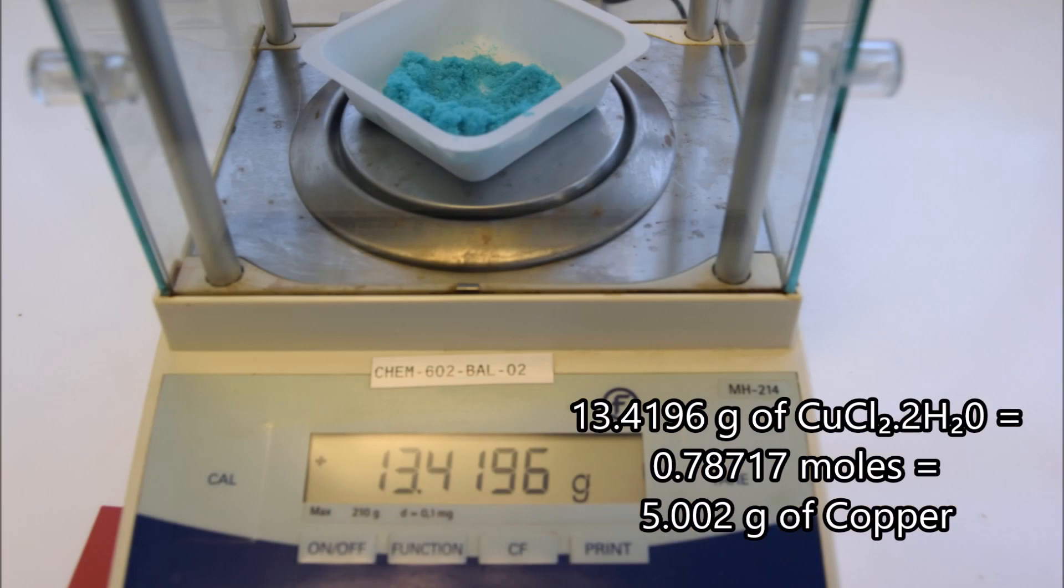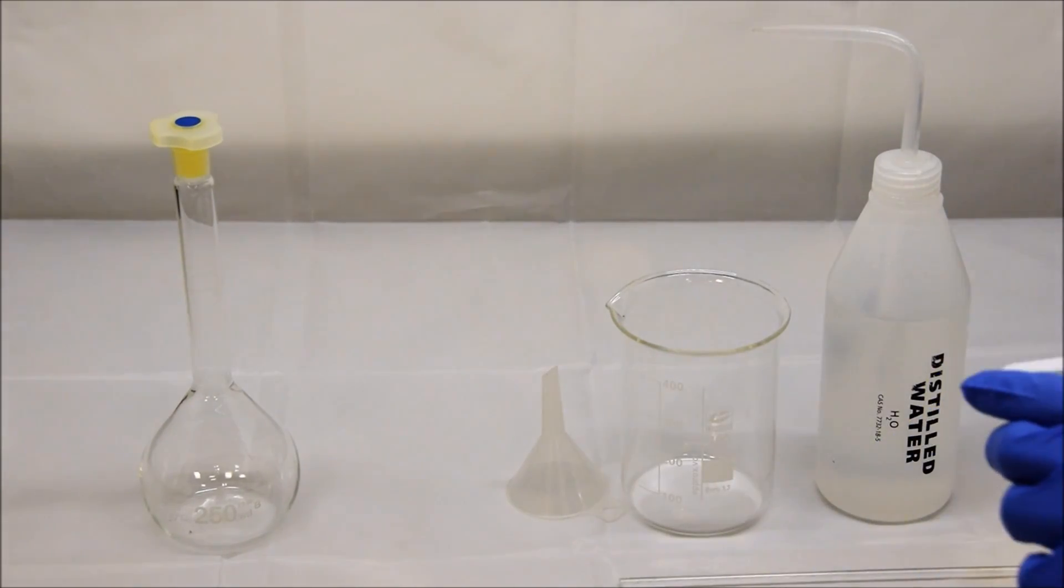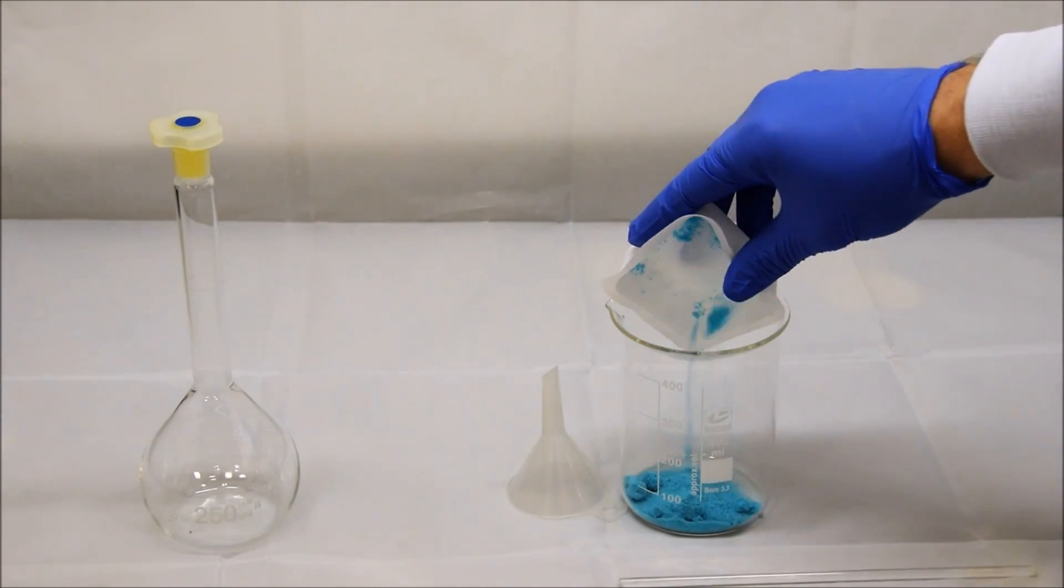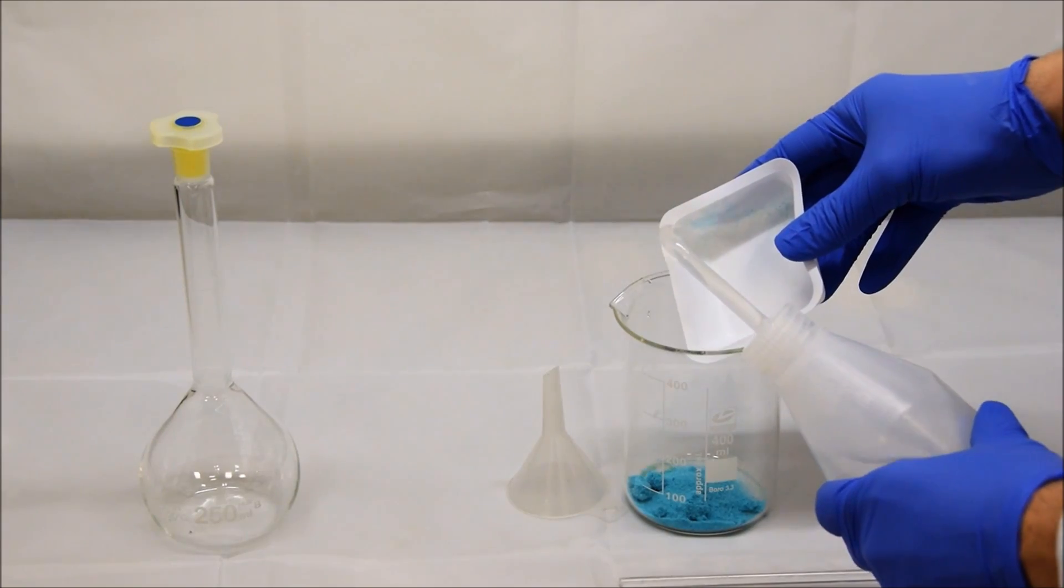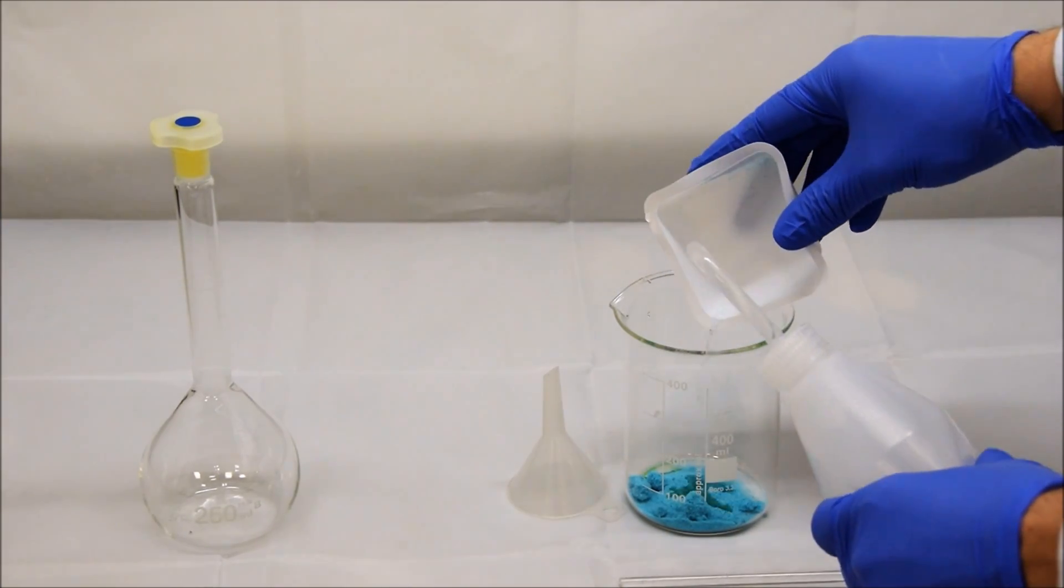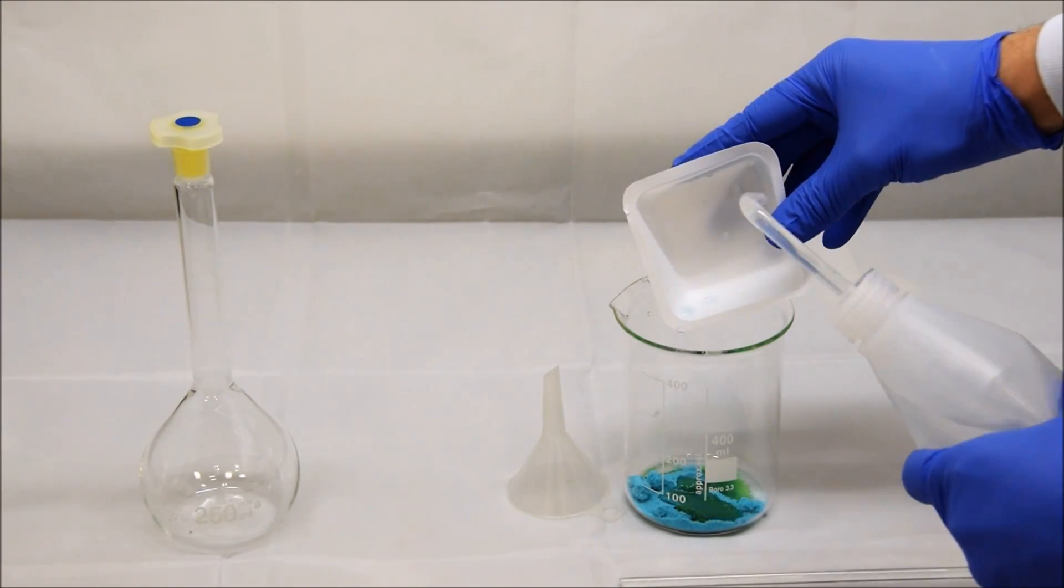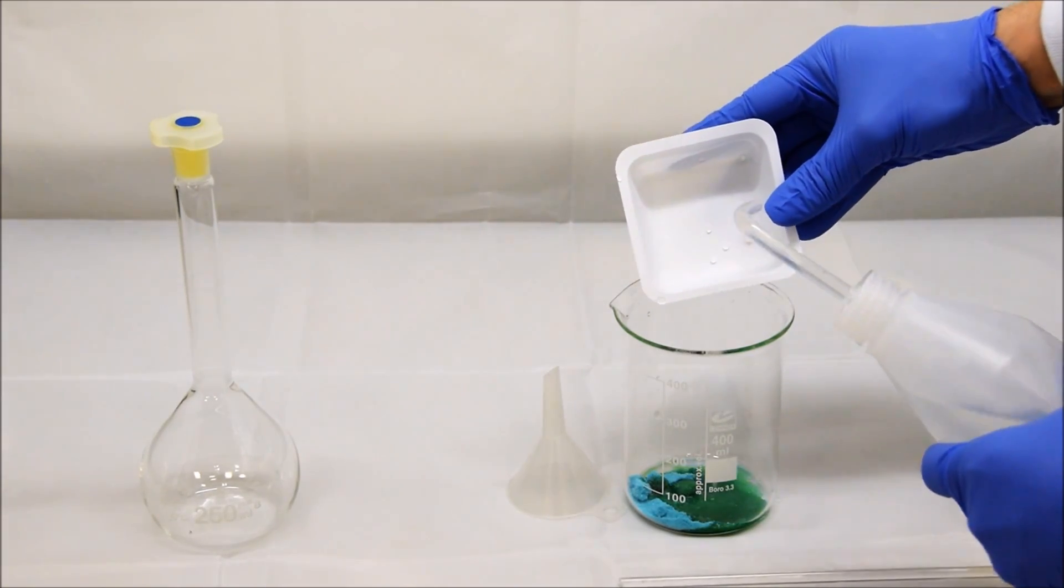So now we have our sample prepared, we need to prepare some standards to measure it against. To do that, we weigh out exactly a known amount of copper. In our case, we're going to use copper chloride and we're going to weigh out 13.4196 grams. If we know what the molecular formula is, we can work out exactly how much copper that corresponds to. So to do that, again, we do the same quantitative transfer. This time there's slightly more steps in it. We transfer it from the weigh boat, carefully washing it out so that it's all into the beaker, and then once we have it in the beaker, what we're going to do is we're going to add in sufficient liquid to dissolve it, so that it's easier to transfer into the volumetric flask.